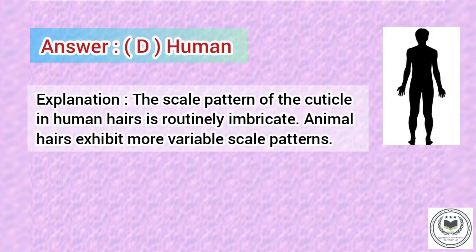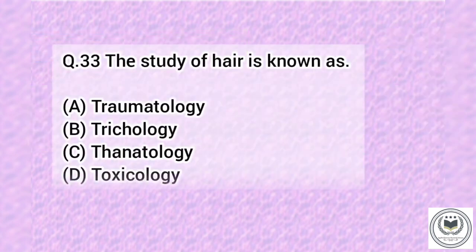Explanation. The scale pattern of the cuticle in human hair is routinely imbricate. Animal hairs exhibit more variable scale patterns.